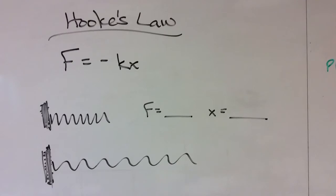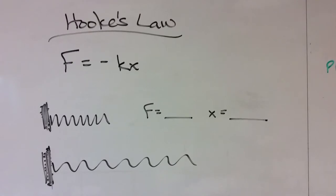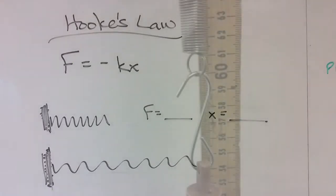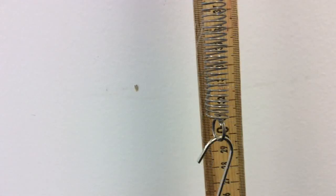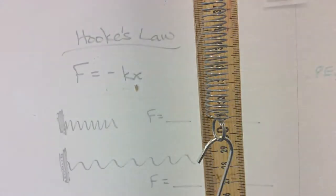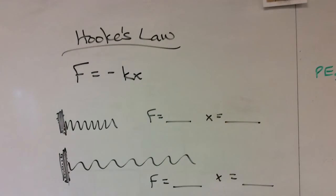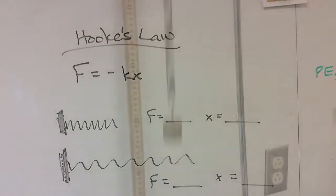First you'll need the spring constant using Hooke's law. You measure two different forces, two different displacements. So stretch it a little bit, find a force in displacement. Stretch it a whole lot more, find a force in displacement. Then using the differences between the forces and the displacements, calculate the spring constant.